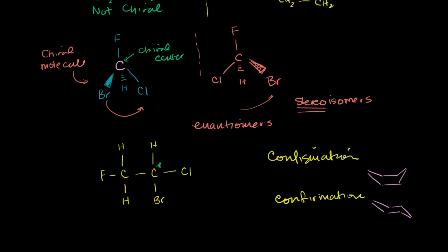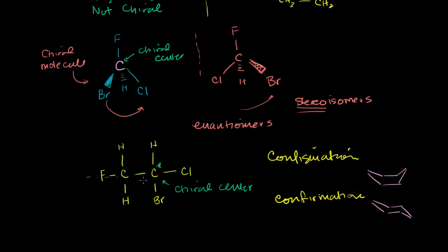So this is a chiral carbon — sometimes marked with an asterisk. But if we look at this other carbon, it's bonded to a fluorine and another carbon, but also to two hydrogens. So it's not chiral — it has two of the same groups bonded to it, and you can even see an axis of symmetry through it. This first carbon, however, is a chiral center, also called a chiral atom or asymmetric carbon. Because this molecule has a chiral center, its mirror image would be an enantiomer and is not superimposable on itself.